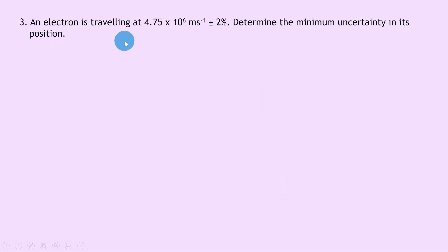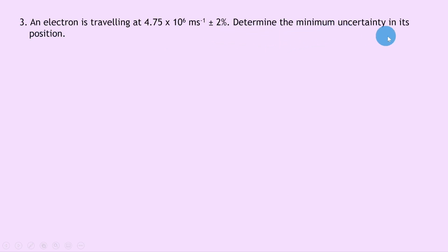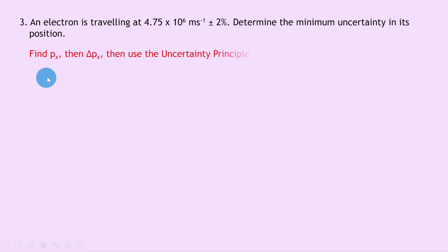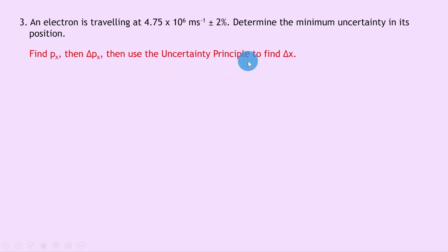Question 3 says an electron is traveling at 4.75 times 10 to the 6 meters per second plus or minus 2 percent. Determine the minimum uncertainty in its position. The strategy here is to first find the momentum in the x direction px, then the uncertainty in that value, and then use the uncertainty principle to find delta x, the uncertainty in the position.